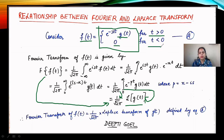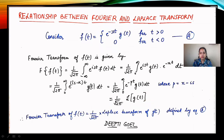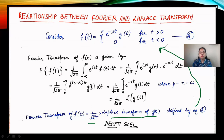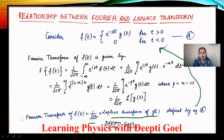So if our function can be defined by such an equation, then we can have a relationship between the Fourier transform and the Laplace transform. The Fourier transform of f(t) is nothing but 1 by root 2 pi into the Laplace transform of g(t), where f(t) and g(t) are defined by this equation. This is a very interesting relationship between the Fourier and the Laplace transforms. Thank you and meet you again.